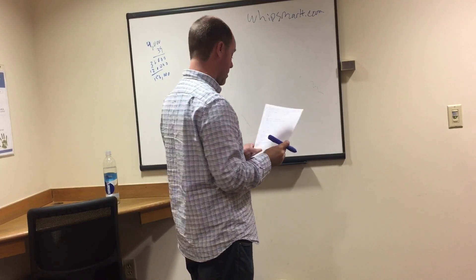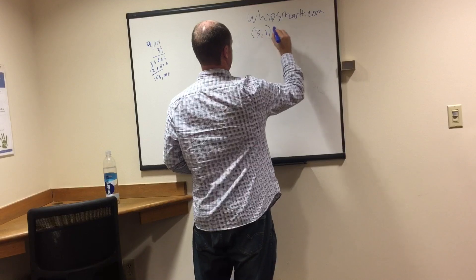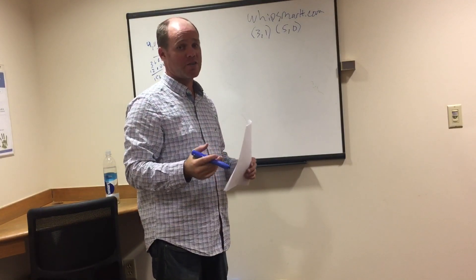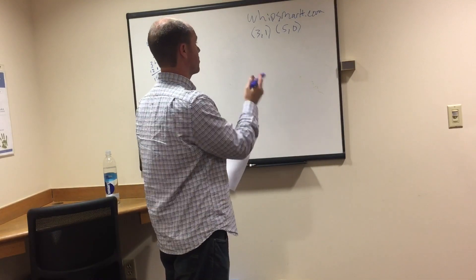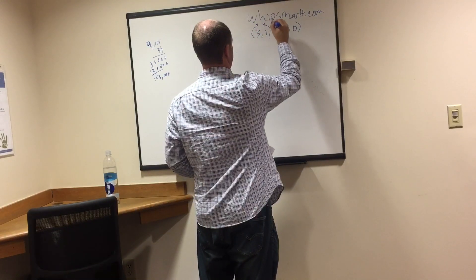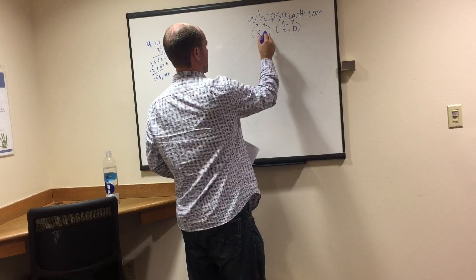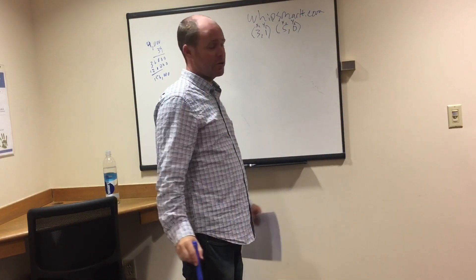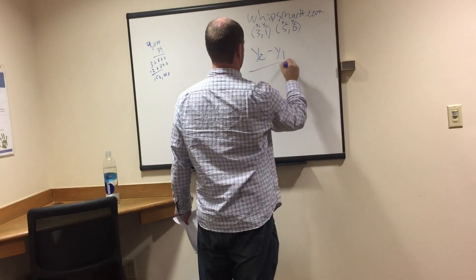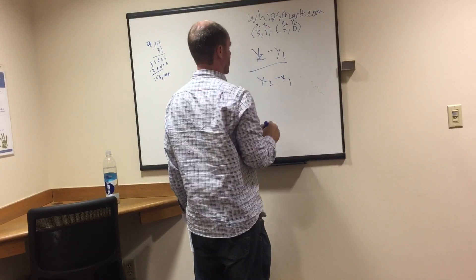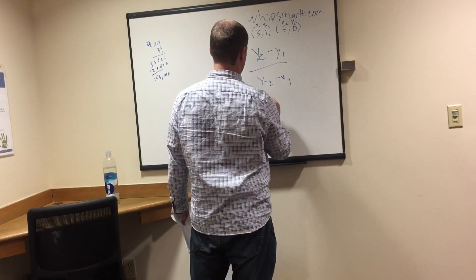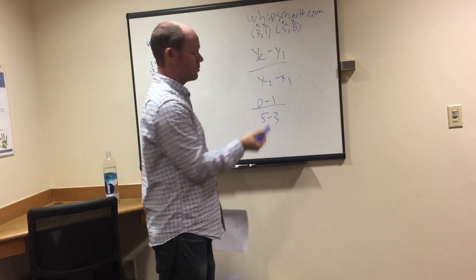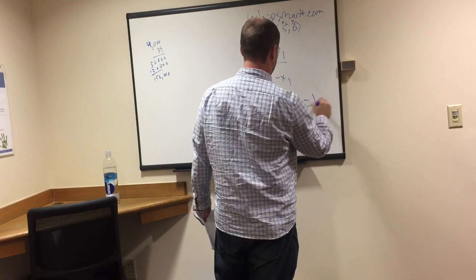Last one, and probably the hardest: slope and y-intercept. This requires more work than any of the other questions. We're given two points: (3, 1) and (5, 0), labeled x1, y1 and x2, y2. The slope formula is: slope equals (y2 minus y1) over (x2 minus x1). So: zero minus one over five minus three equals negative one over two, which is negative one half. Slope equals negative one half.